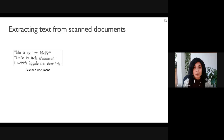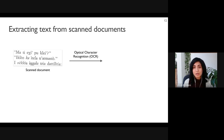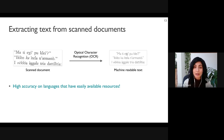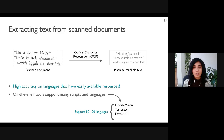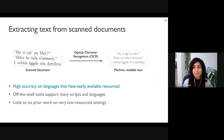Extracting text from scanned images of printed books requires Optical Character Recognition, or OCR. The OCR system identifies each character present in the image to produce machine-readable text. OCR is a very well-studied task and state-of-the-art methods have high accuracy on languages with enough resources for training models. There are several off-the-shelf OCR tools that support many scripts and languages, like Google Vision and Tesseract, with pre-trained models for about 80 to 100 languages.